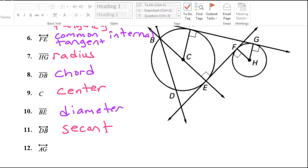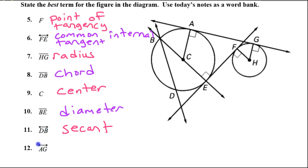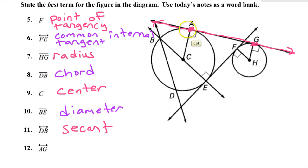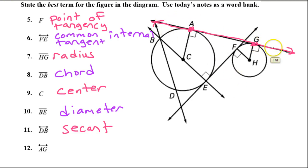Line AG — see the line symbol? Here's A and here's G, so this is line AG. This is a tangent line, but it's tangent to both circles, so that makes it a common tangent. And it is external — it does not pass between the circles, it stays on the outside. So that makes this a common external tangent.